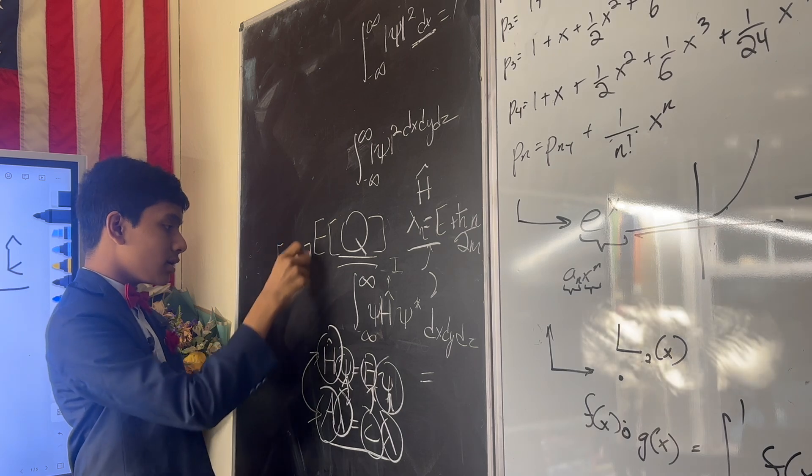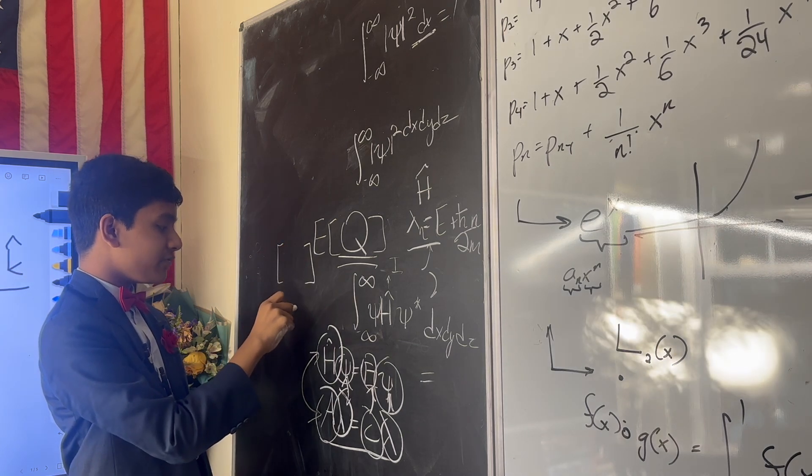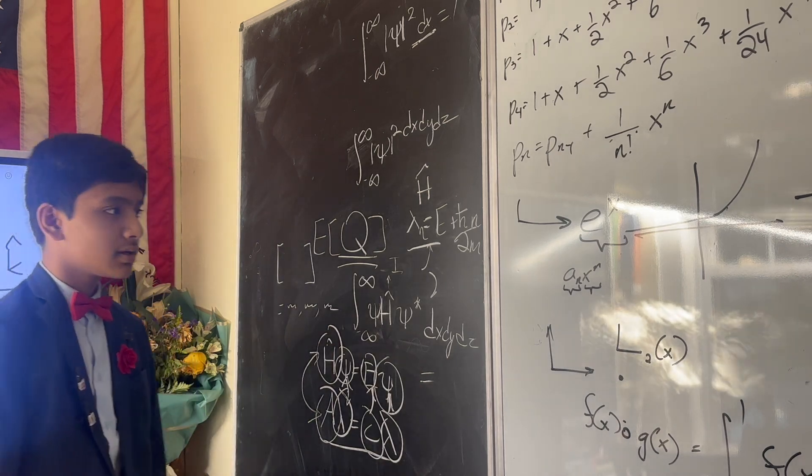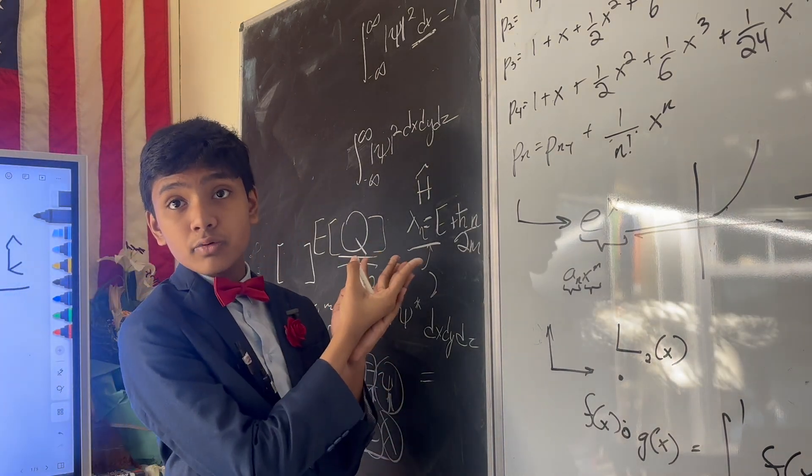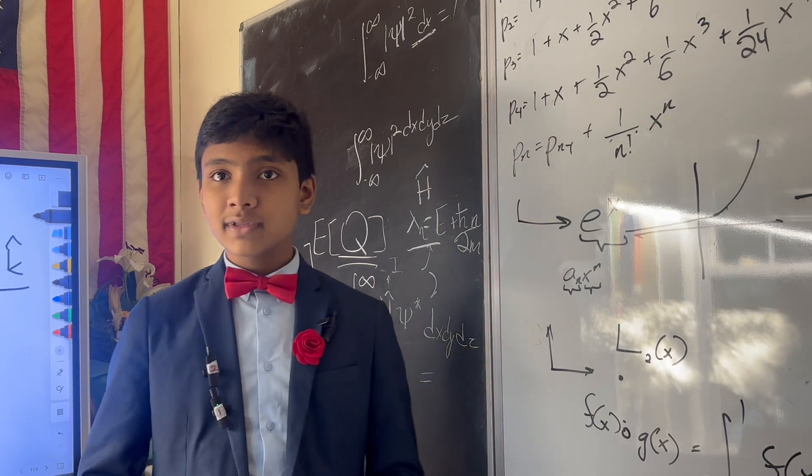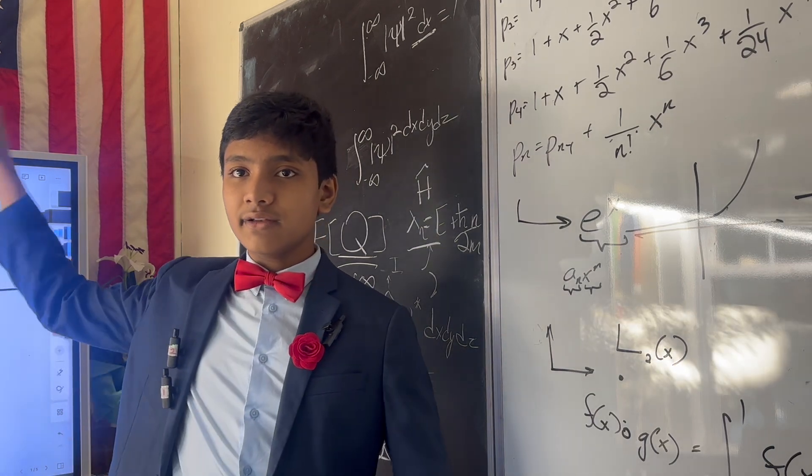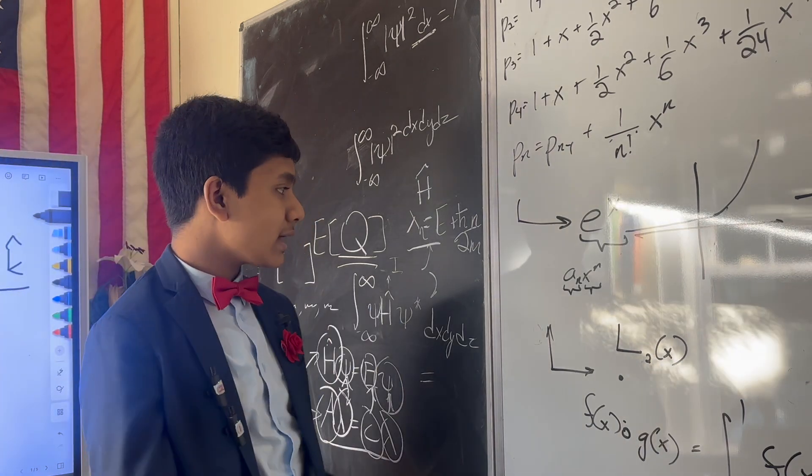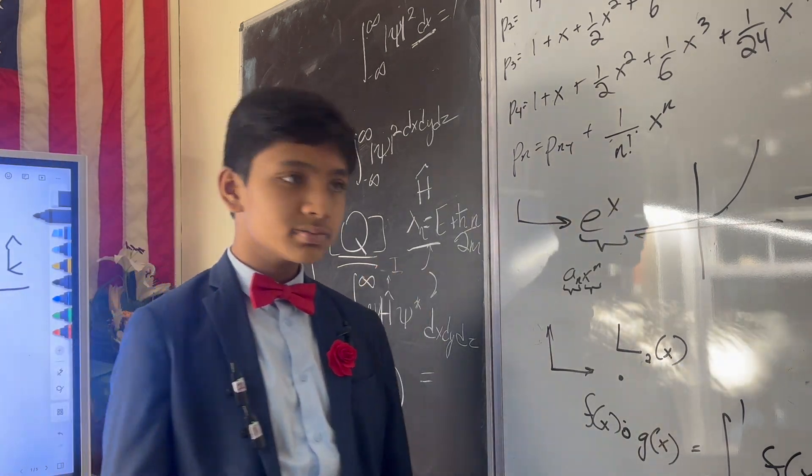A matrix can have finitely many eigenvalues, sometimes with multiplicities. The Hamiltonian operator, for example, has infinitely many eigenvalues. You can keep applying the ladder operator upwards infinitely, and you'll get as many eigenvalues as you possibly need.